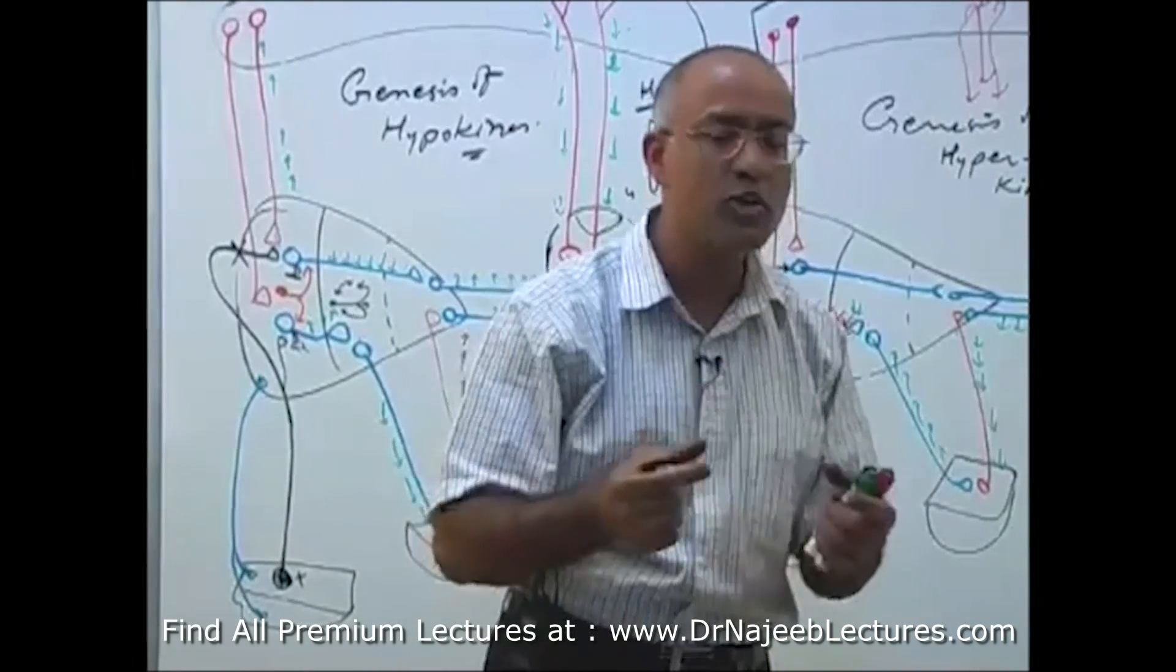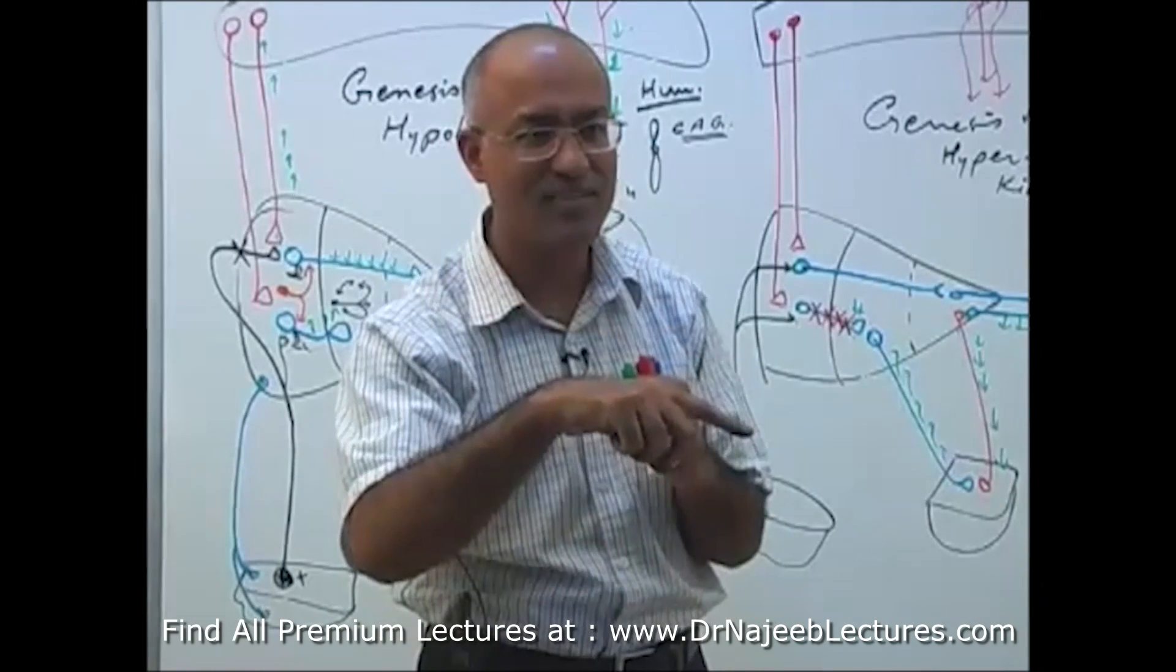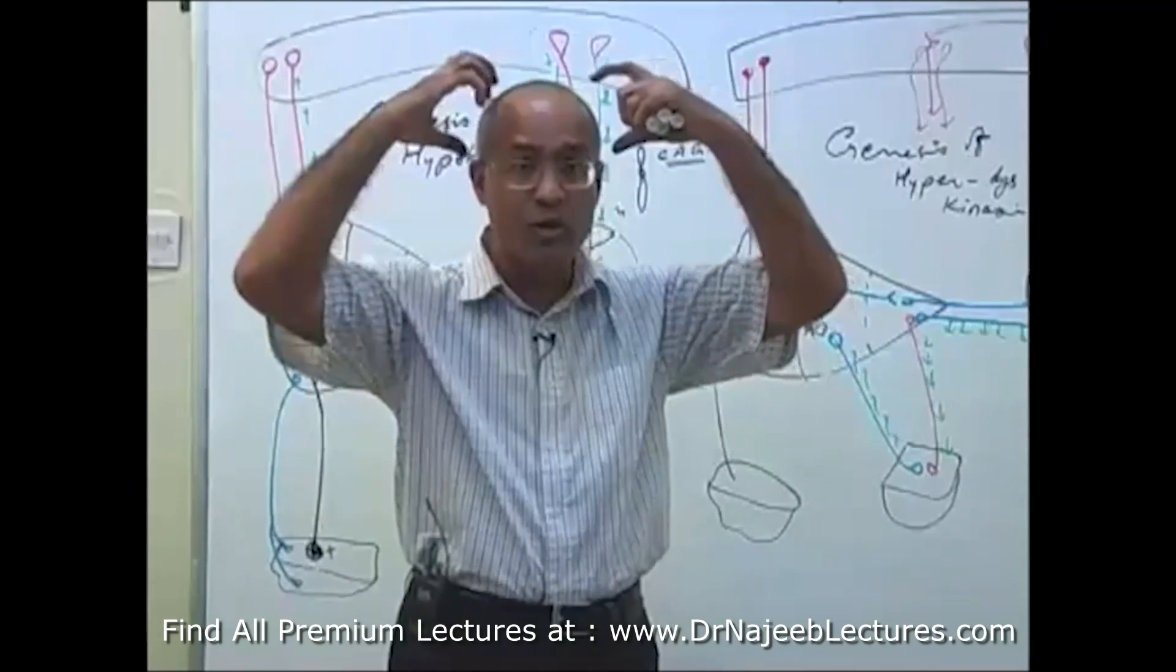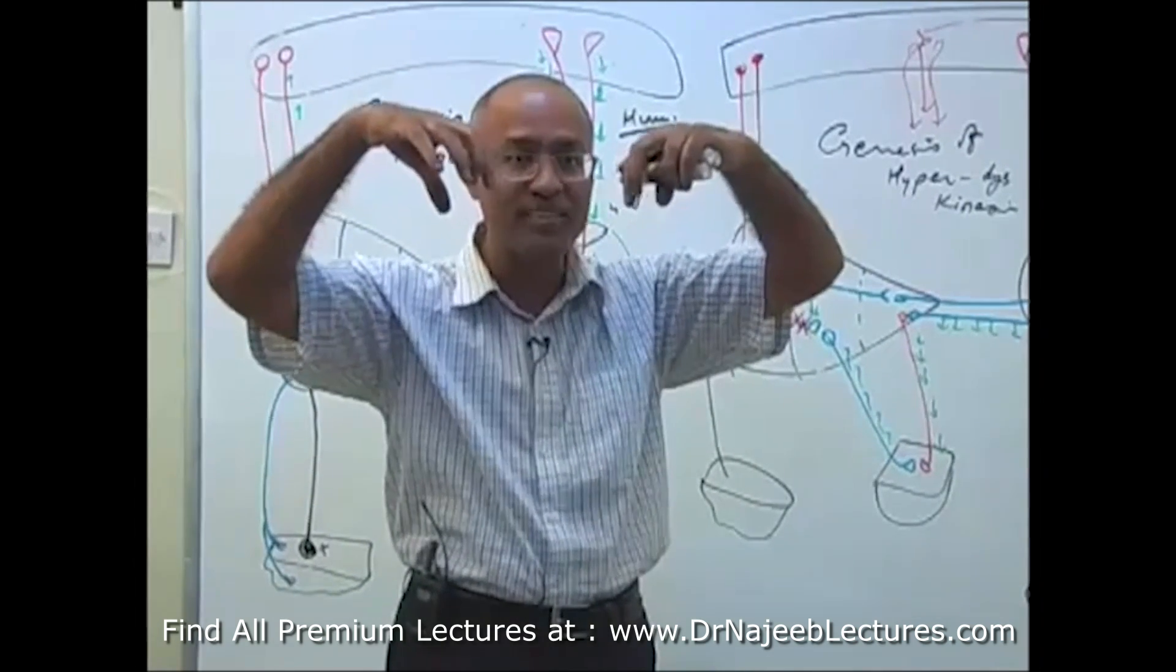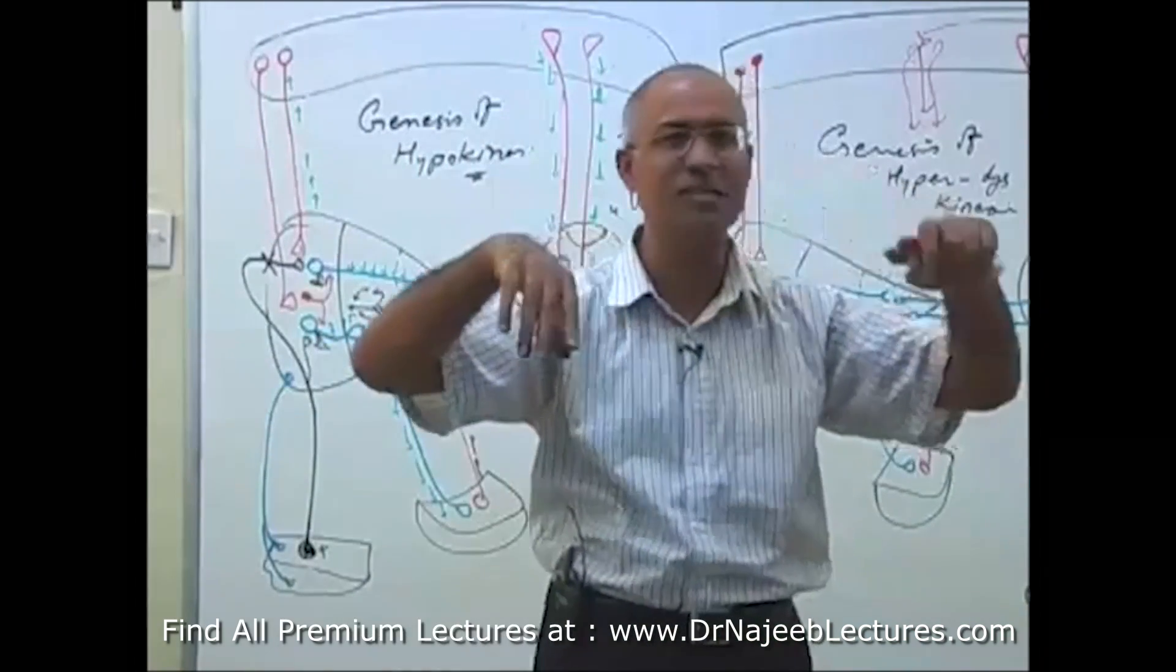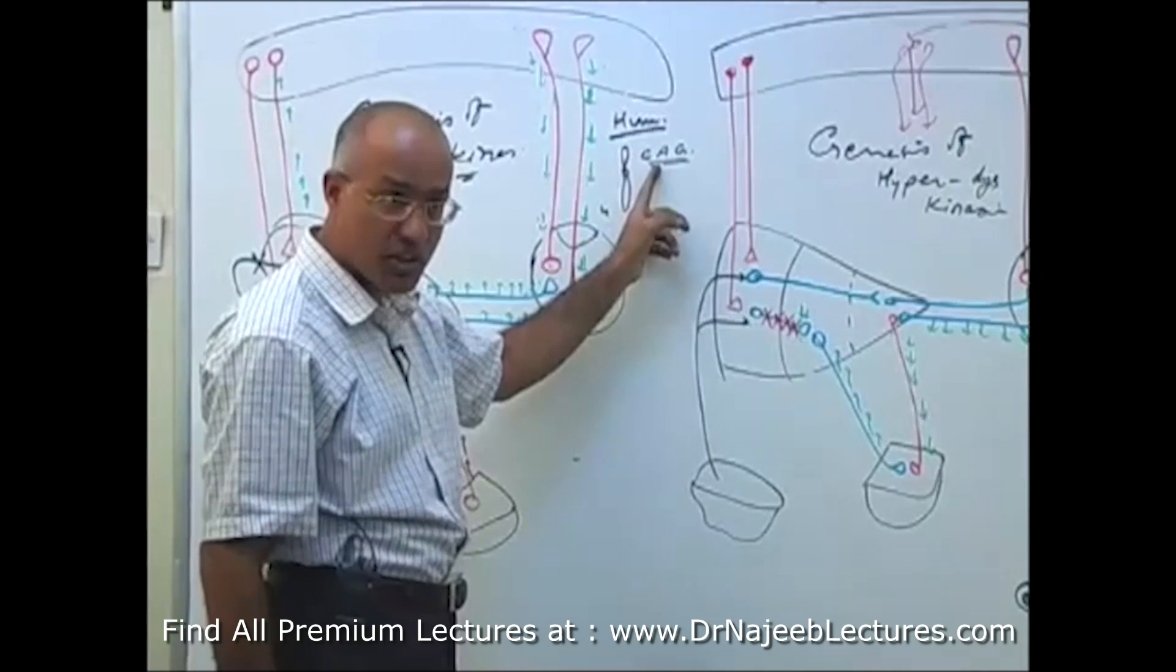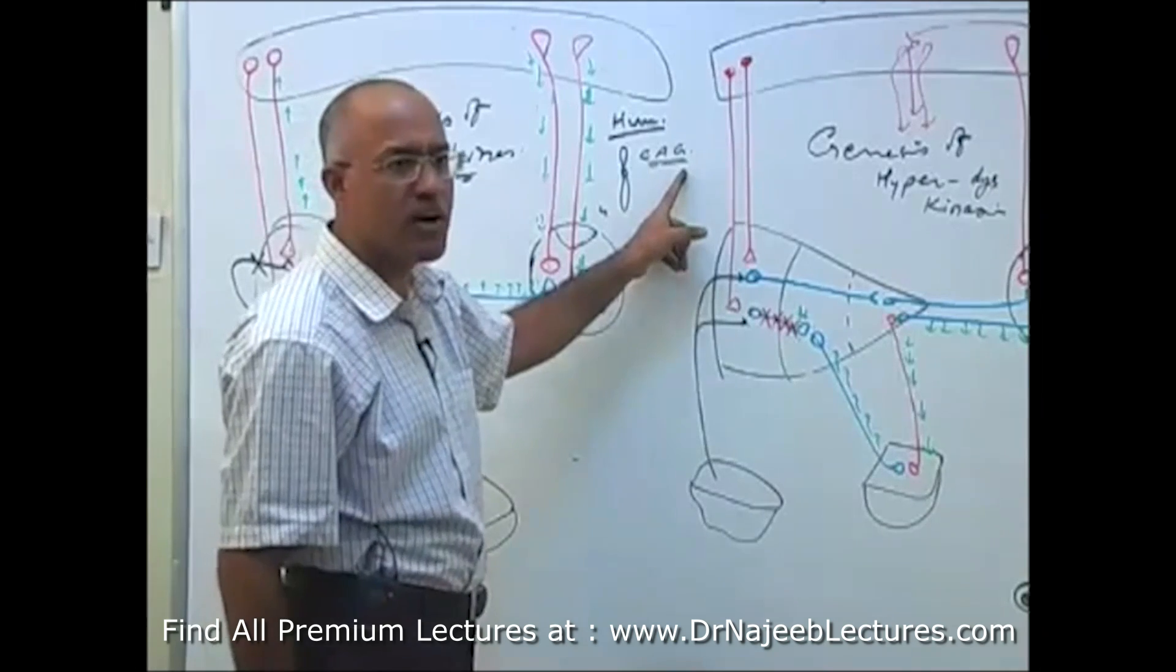Why do the trinucleotide repeats amplify? Because during oogenesis, or spermatogenesis, trinucleotide repeats are over-copied. So children have more repeats than the parents. You understand me now? So generation after generation, Huntington's disease get more severe, and appear at younger age. What happens in Huntington's disease? That especially head of the caudate nucleus degenerate, and lateral ventricle looks as if it is abnormally widened, because head of the caudate nucleus is no more occupying its normal anatomical position. Am I clear?